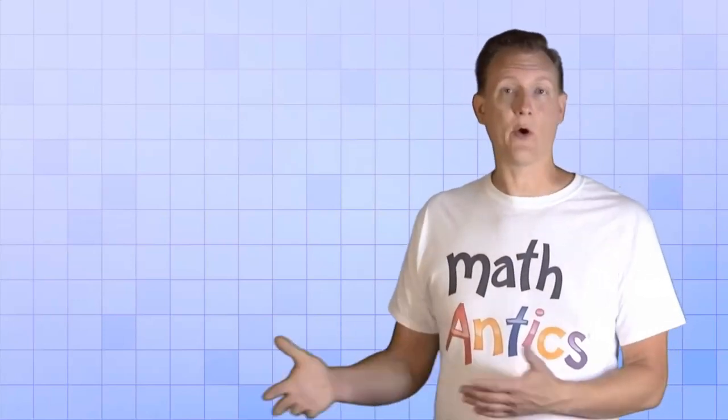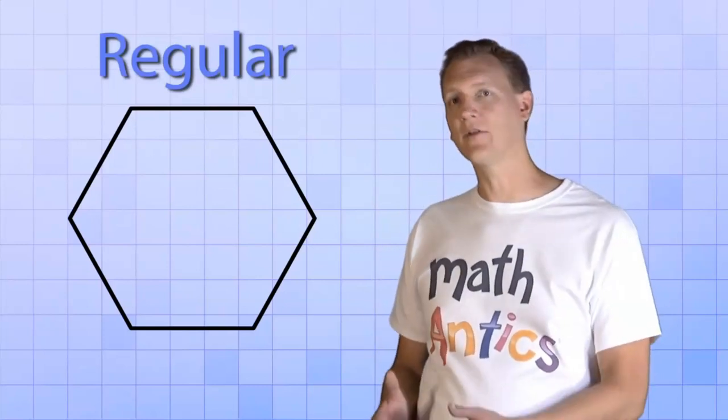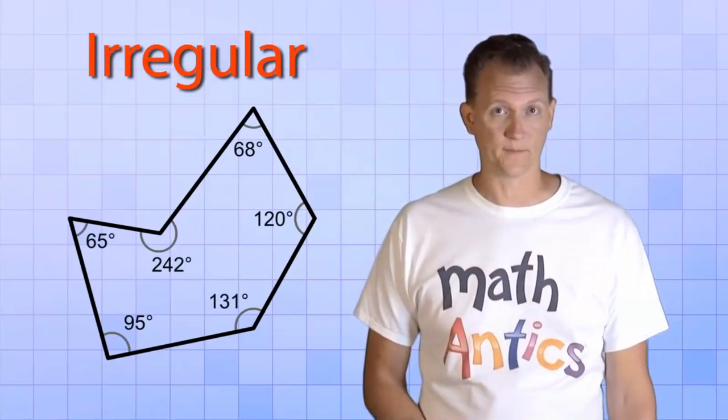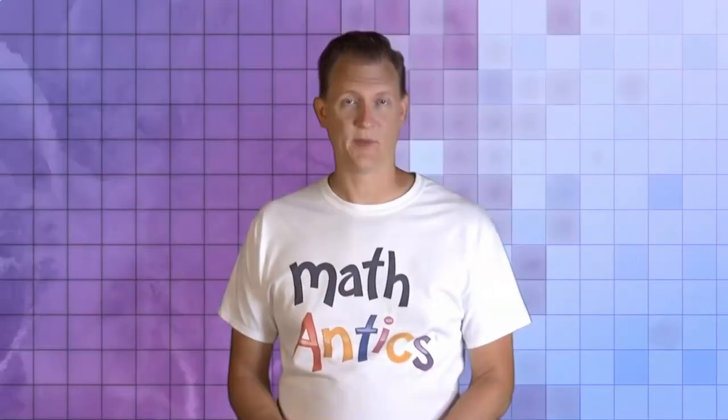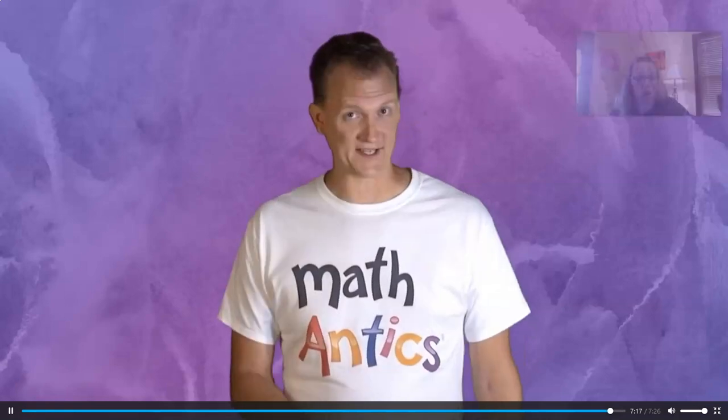Polygons that have five, six, eight, or however many sides are called regular polygons if all their angles are equal, and irregular polygons if their angles are not equal. There are a lot more polygons than that, but as long as you know what polygons are and how to identify them, you're ready to move on. Good luck, thanks for watching Math Antics, and I'll see you next time.